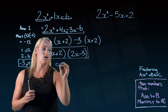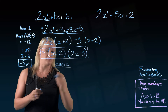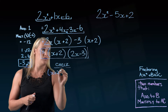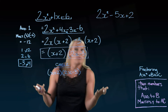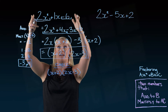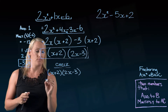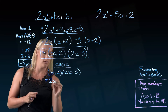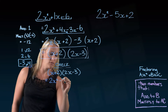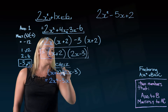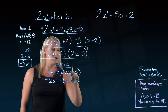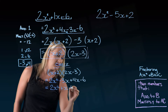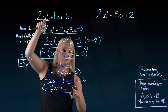Something nice about factoring is we can always do a check to see if we're right. We'll write our answer, x plus 2 and 2x subtract 3, and multiply those together using FOIL. x times 2x is 2x squared; x times negative 3 is negative 3x; 2 times 2x is 4x; and 2 times negative 3 is negative 6. Simplified, that gives 2x squared plus x subtract 6, which matches our original question.